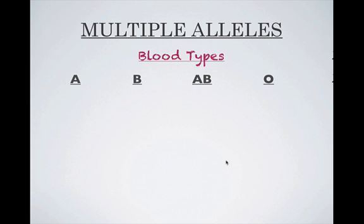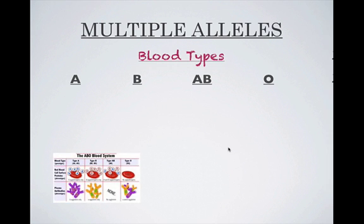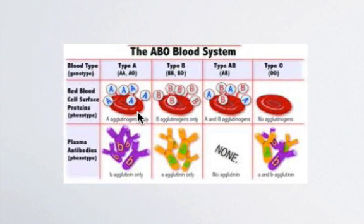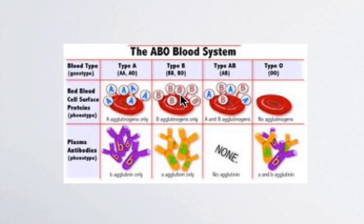What determines what type of blood you have? Blood type is really all determined by protein markers on your blood cells. If you have type A blood, you're going to have type A markers. If you have type B blood, you have type B receptor proteins on the outside of your blood cells. Type AB, you have both. And type O, you don't have any.